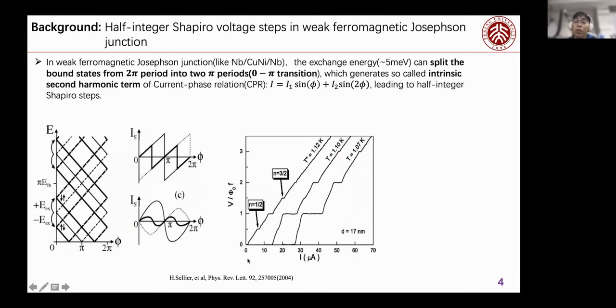But in Celo's 2004 work, they found that in a weak ferromagnetic Josephson Junction, there will be half-integer Shapiro Steps. In this paper, they explain that the exchange energy can split the bound states from 2π periods into π periods, and this is called the zero to π transition. You can see from these figures, the second black lines will be split into two lines, and the period will change from 2π into π. This will generate the so-called intrinsic second harmonic term of current phase relation.